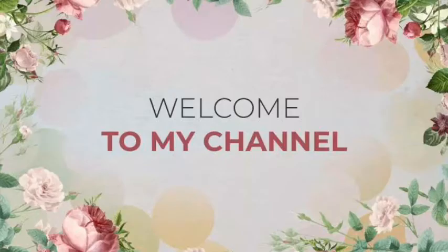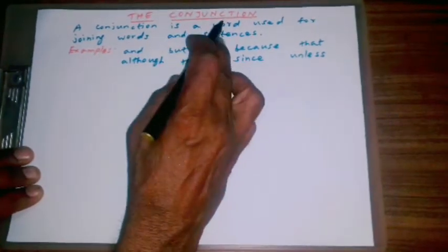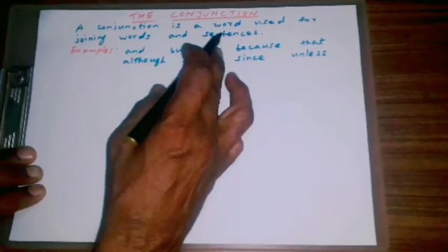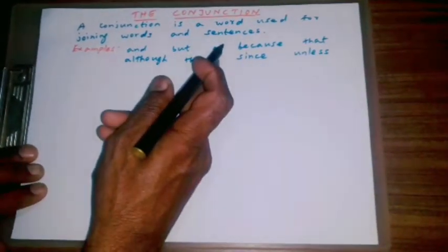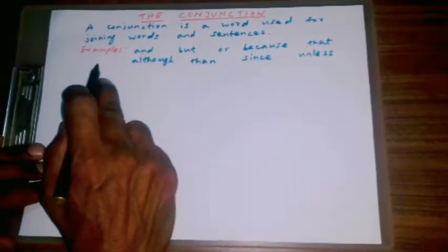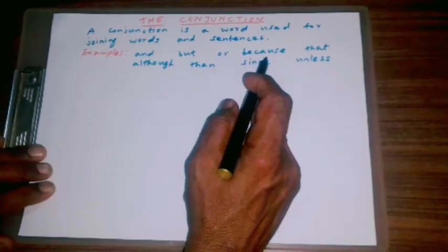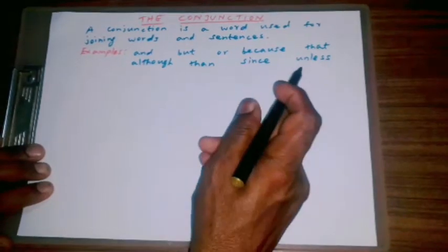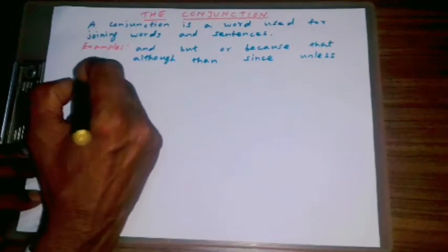Hello students, welcome to my YouTube channel. Today we are going to see about conjunctions. A conjunction is a word used for joining words and sentences. Examples: and, but, or, because, that, although, than, since, unless.